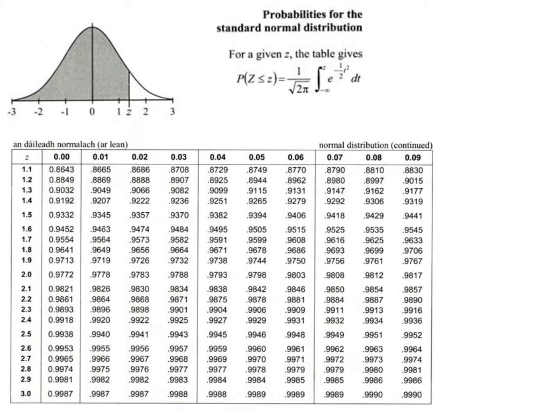A question that often comes up from students starting inferential statistics is: when I looked up 1.96 in the log tables on page 36–37, I didn't get 95% — I got 97.5%. And that's true — 1.96 does give 97.5% or 0.9750 in the tables. So where is our 95% coming from?